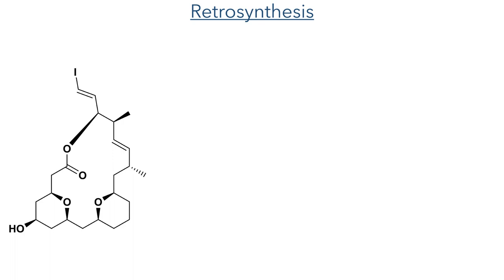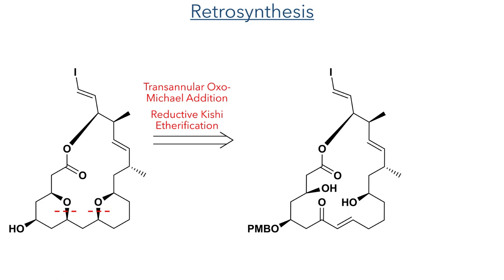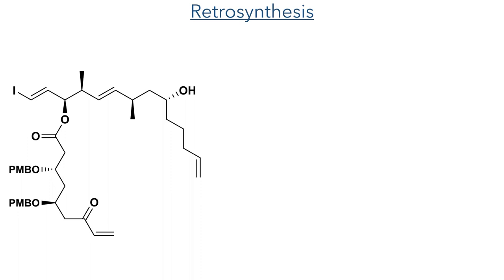In the first step, they would use a transannular oxo-Michael addition, while the second ring could be synthesized using a reductive Kishi etherification. To construct the macrocycle, they would use olefin metathesis, which is a proven strategy for the synthesis of macrocycles.